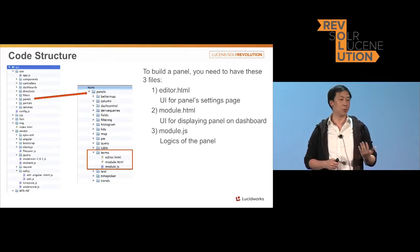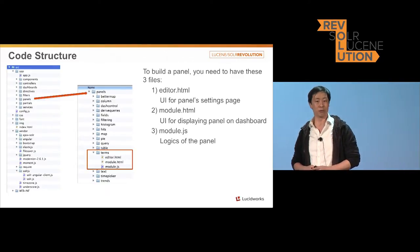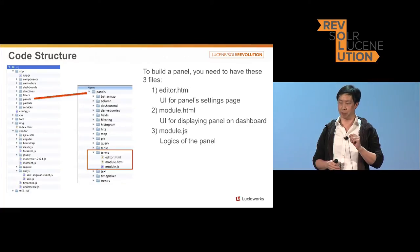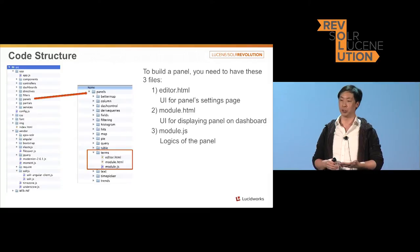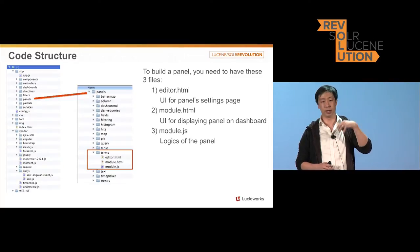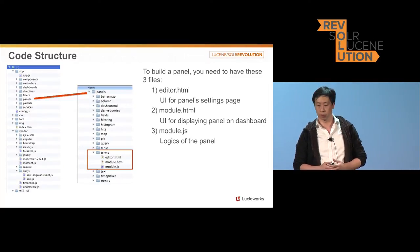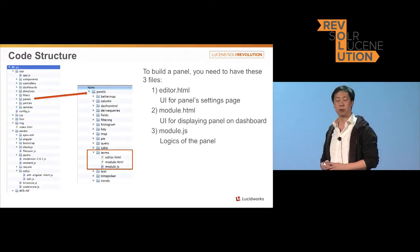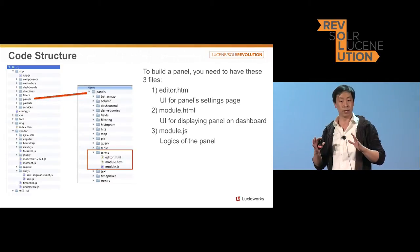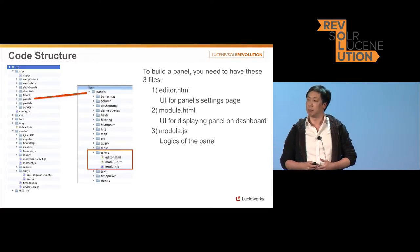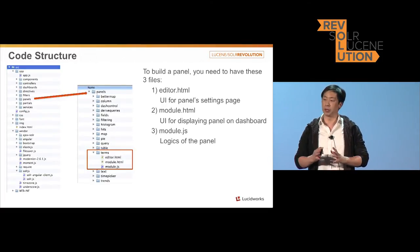That's going to depend on what kind of UI you're trying to build. For example, if you build a map panel, then when somebody clicks on the edit button, you may want to ask them to input latitude, longitude, country, something like that. So that way you can get those settings and send them as a query to the Solr server. The second file is module.html. That one is used for rendering the UI — the actual display of the dashboard. All the charts, bar chart, pie chart — it's going to render in module.html.